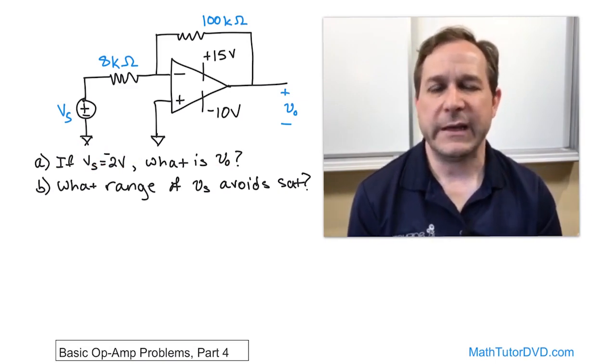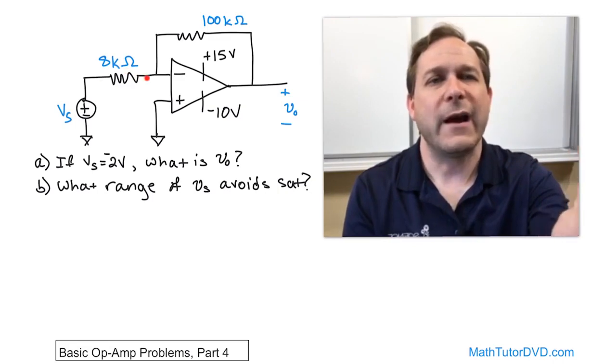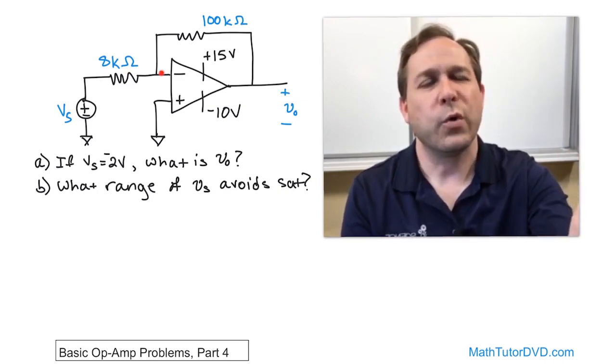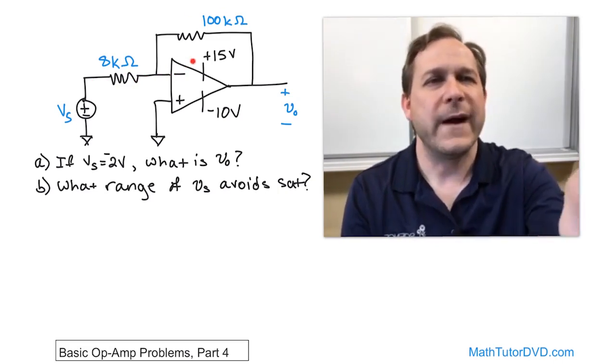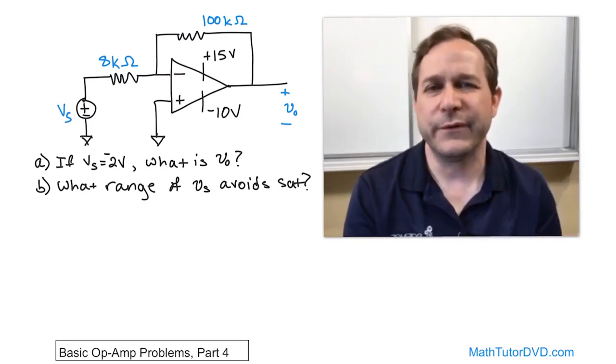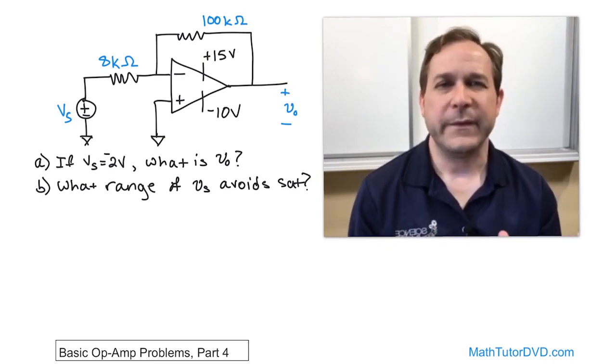For part A, our strategy is going to be to use everything that we've learned exactly the same way. We're going to figure out what the current is through this resistor. We're going to use the constraints that no current can go inside of that op amp. We'll find the current through here, and we'll find the output voltage that corresponds to all of that. That's what we're going to do using first principles.